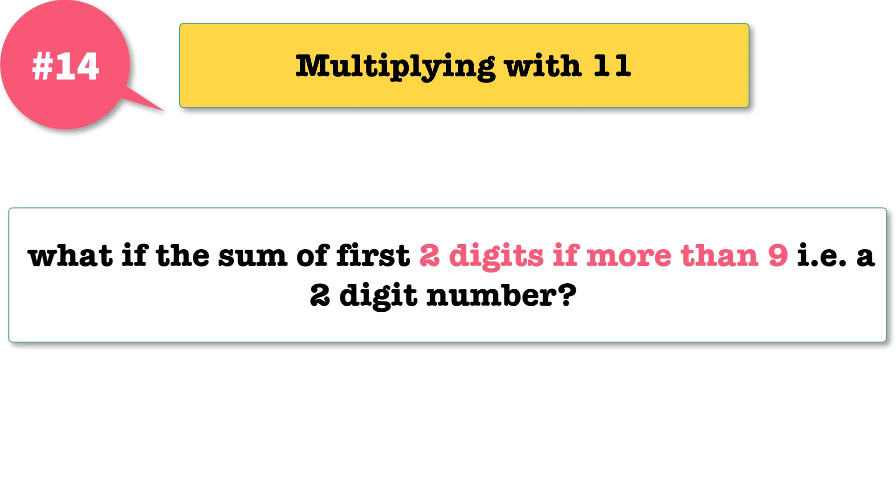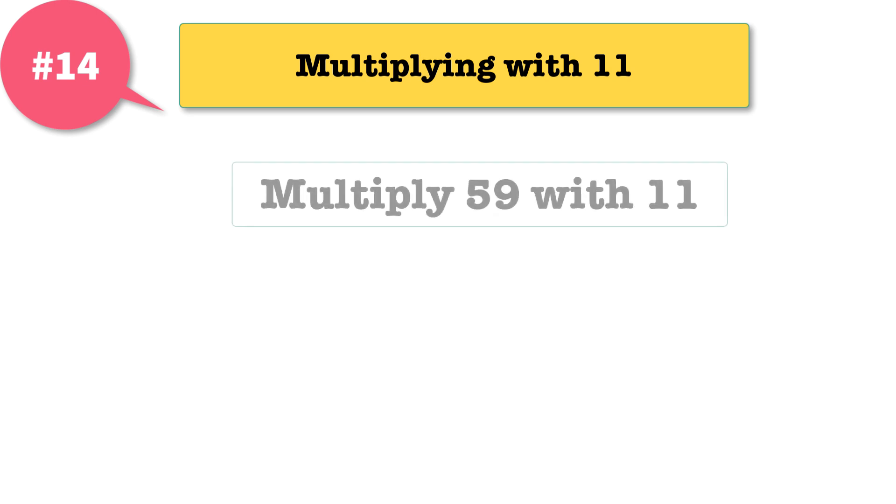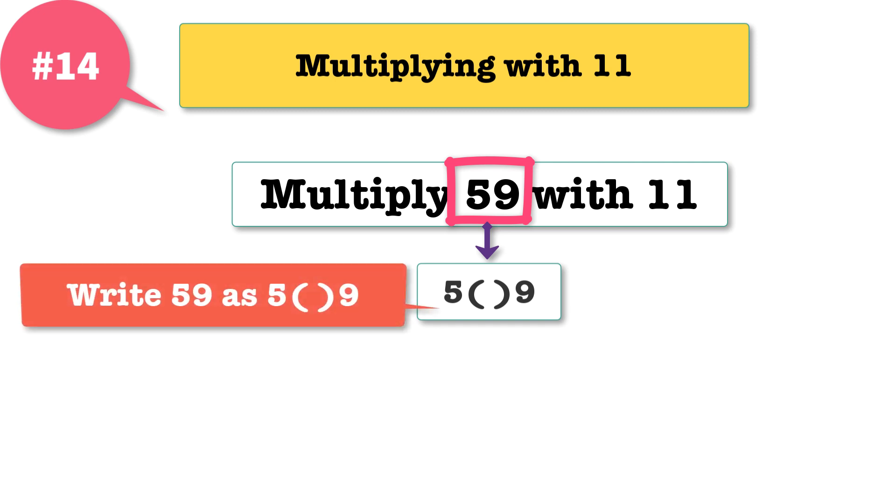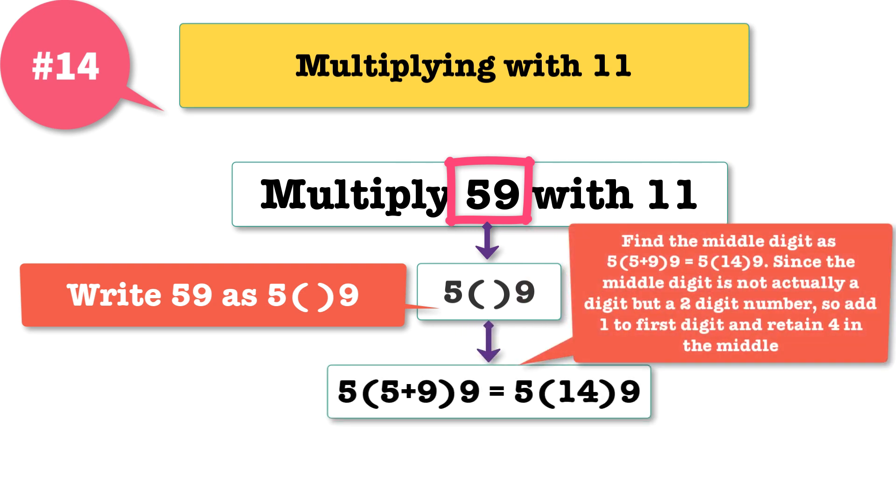But what if the sum of first two digits is more than 9? That is, a two digit number. Let us take an example where sum is greater than 9. Say the number is 59 that has to be multiplied with 11. Write 59 in this way where space is for a new digit that will be inserted in the middle. Find the middle digit like this. Since the middle digit is not actually a digit, but a two digit number, so add one to first digit and retain 4 in the middle. The solution is 649.